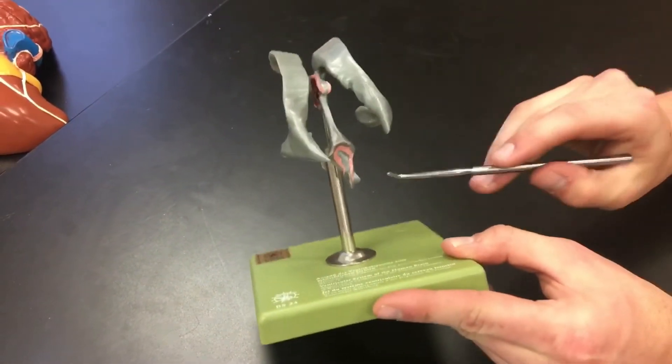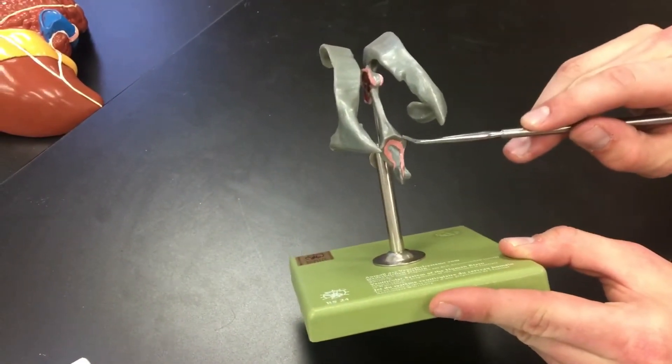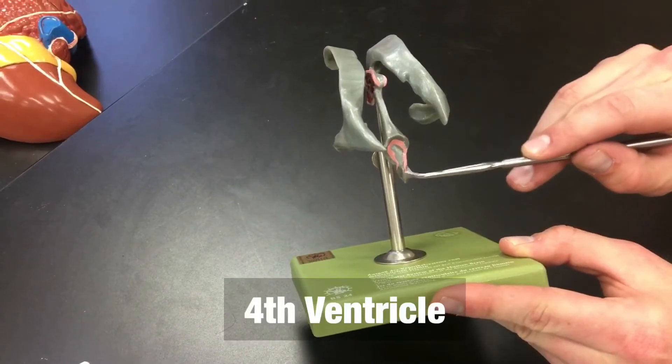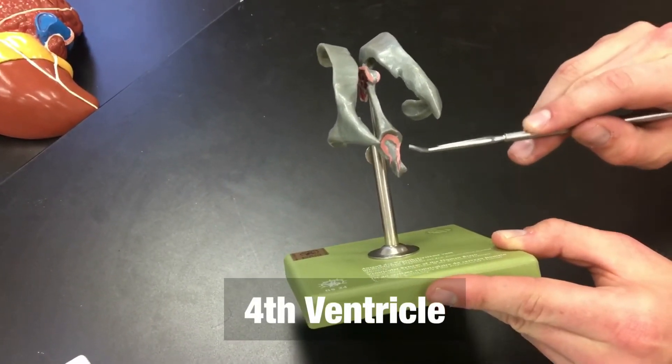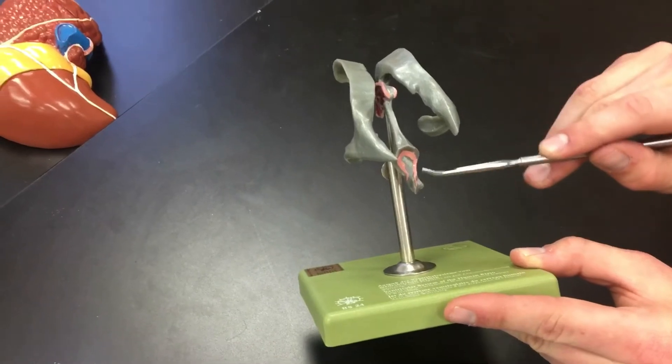Spin it posteriorly. Notice where it puffs out like the tail end would be the fourth ventricle.